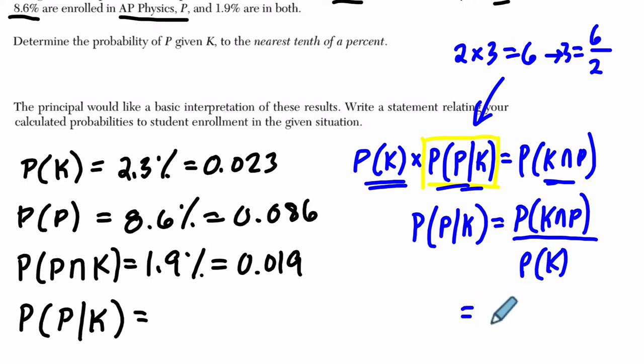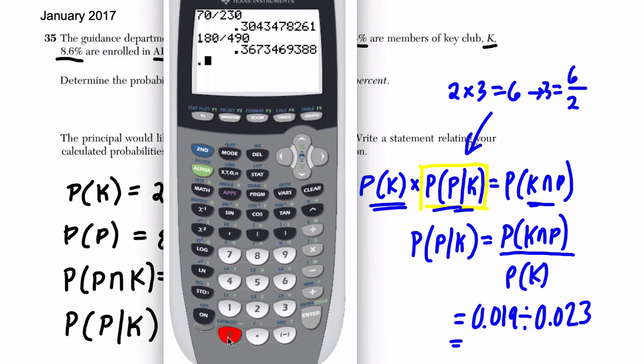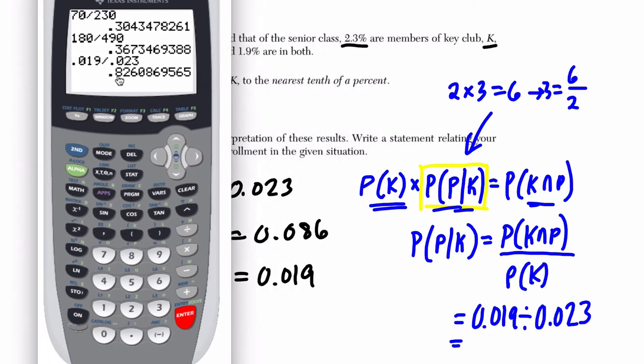Long story short, now I just divide these two. So I divide 0.019 divided by the probability of K, which is 0.023, and this will give me the conditional probability. So let's pull that up. Alright, so let's do that. 0.019, boom, divided by 0.023, it's about 0.826. So about 82%. They want nearest tenth of a percent, so 0.826 around this spot right here. That's the tenth of a percent. So it's 82.6%.